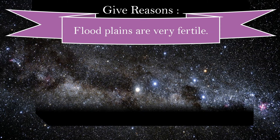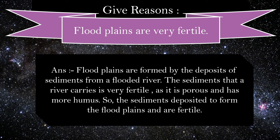Give reasons: Floodplains are very fertile. Floodplains are formed by the deposits of sediments from a flooded river. The sediments that a river carries are very fertile, as they are porous and have more humus. So the sediments deposited to form floodplains are very fertile.